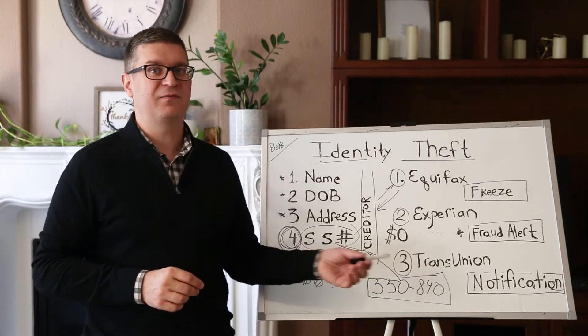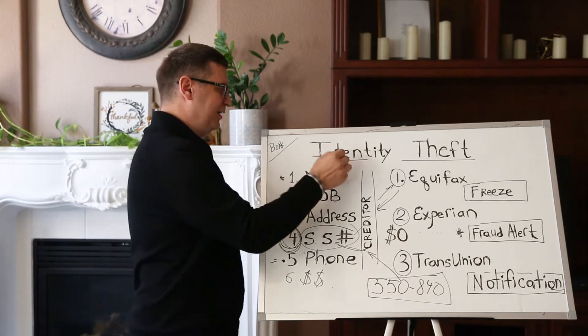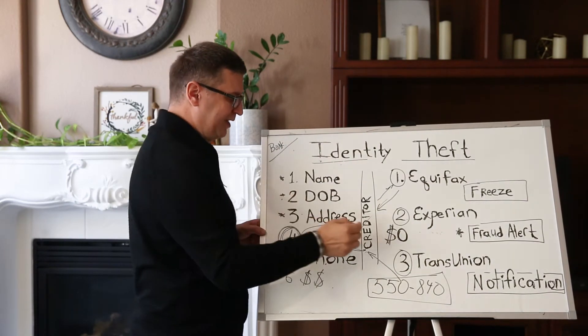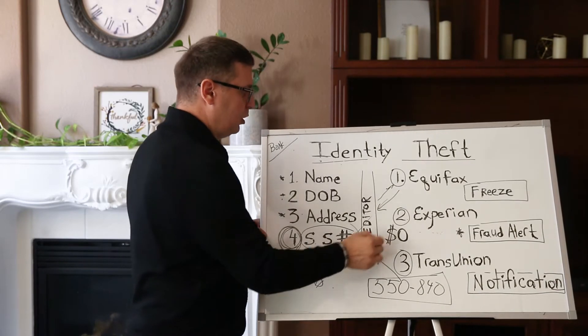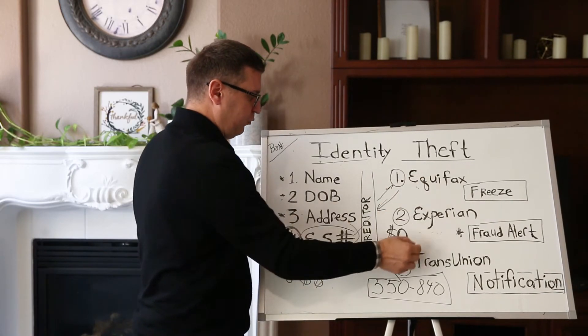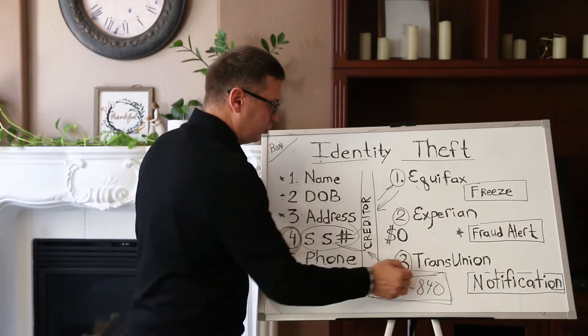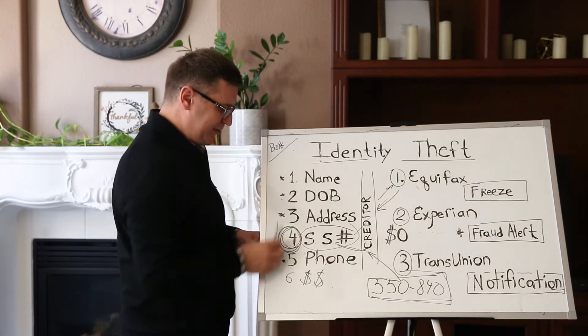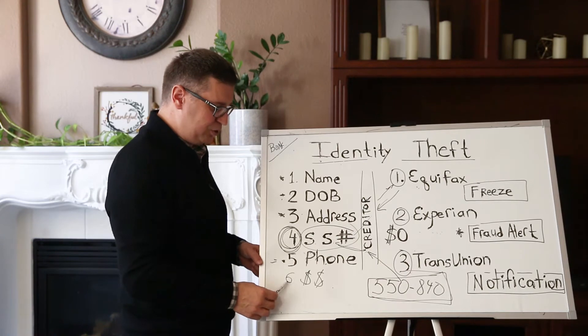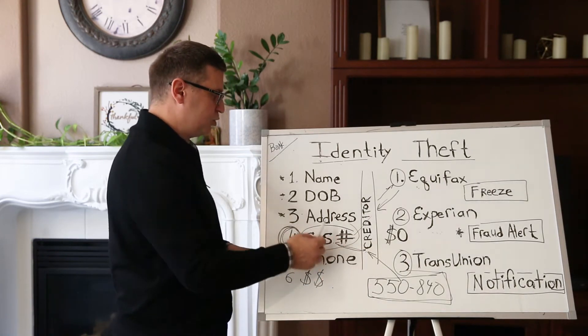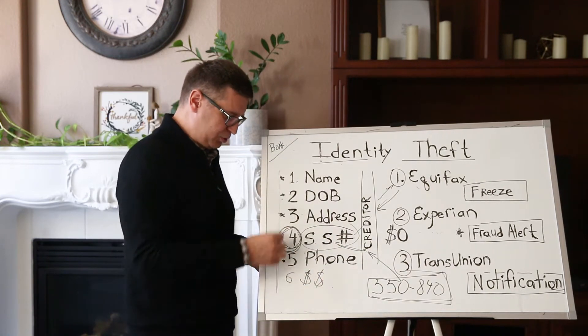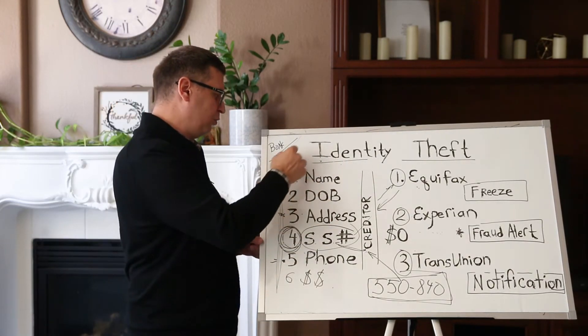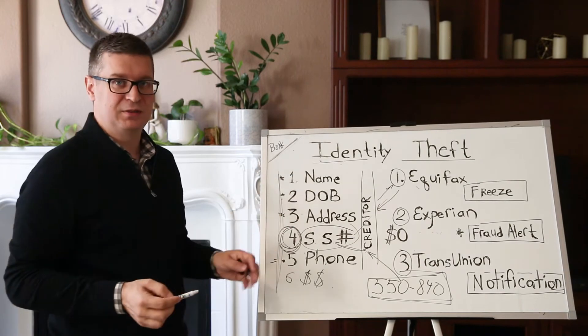Once again, identity theft is when a person stole your information and goes to apply for credit. The creditor asks for your FICO score through these agencies, and once they receive it, based upon this information and the amount of money you make, the creditor issues credit to the person who inquired. Technically it's supposed to be you, but in our case it is the wolf who stole your identity.